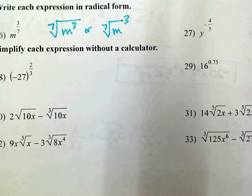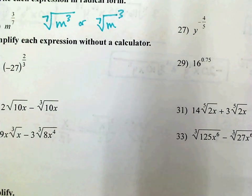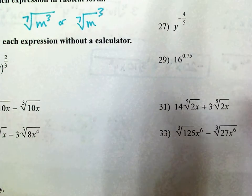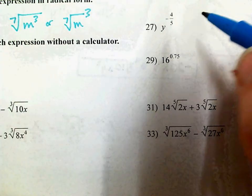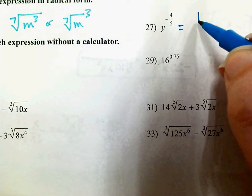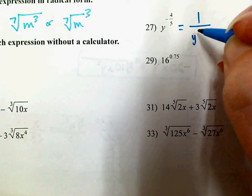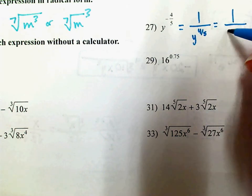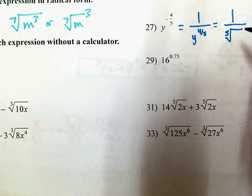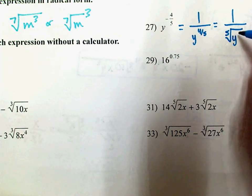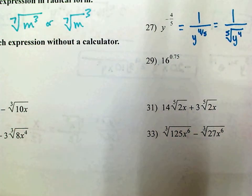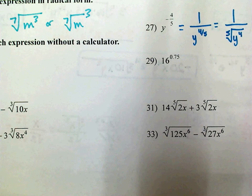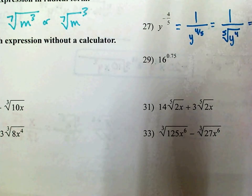On 27, I've got a negative power. A negative power means it belongs in the denominator, so we have y to the 4 fifths. The 5 is in the denominator, so that makes that the root and the 4 the power. So 1 over the 5th root of y to the 4th.